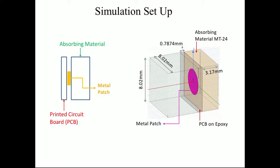The simulation setup: First we have the printed circuit board, or PCB, and then you have the metal patch. Then you have the absorber material. Our setup for the first box is 8.2 millimeters in height, and our width is 8.2 millimeter. For the PCB on epoxy, which epsilon r equals 4.4, your measurement here is 0.7874 millimeters. And then we have the metal patch, which varies in radius. Then you have the absorber material, MT24, which is 3.175 millimeters.